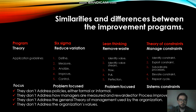Comparing the three improvement programs: Six Sigma reduces variation — one, Define; two, Measure; three, Analyze; four, Improve; five, Control. Lean Thinking removes waste — one, identify value; two, identify value stream; three, flow; four, pull; five, perfection.